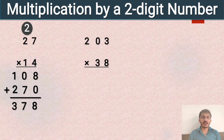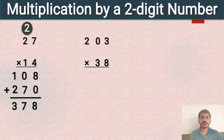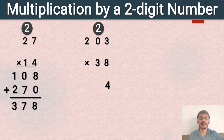Next example is 203 multiplied by 38. 203 is the multiplicand and 38 is the multiplier. First we multiply 203 by 8. 8 threes are 24, so 4 is written at the ones place and 2 is carried forward. 8 zeros are 0, and 0 plus 2 is equal to 2. 8 twos are 16.